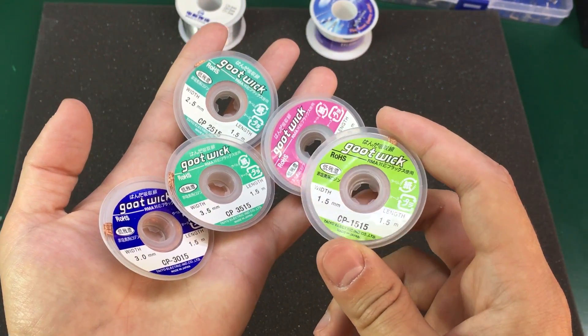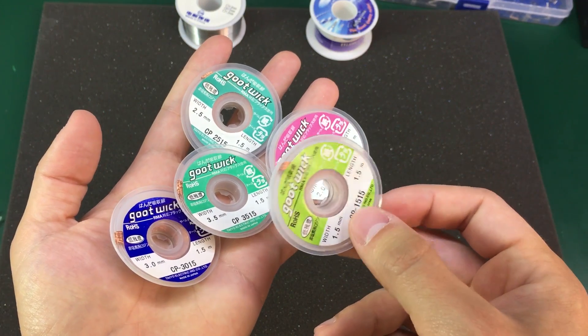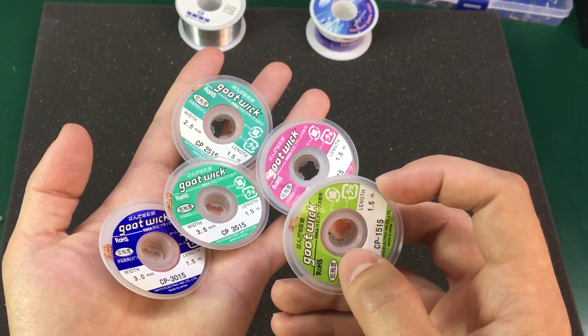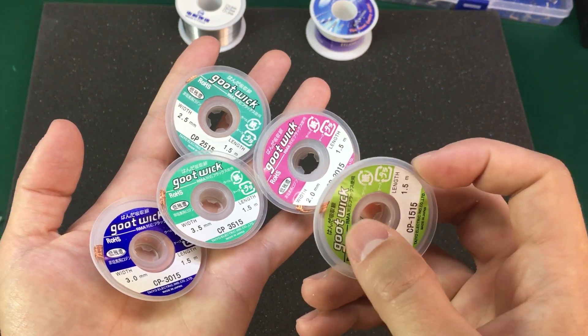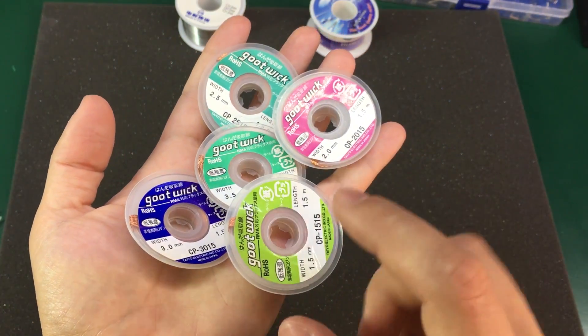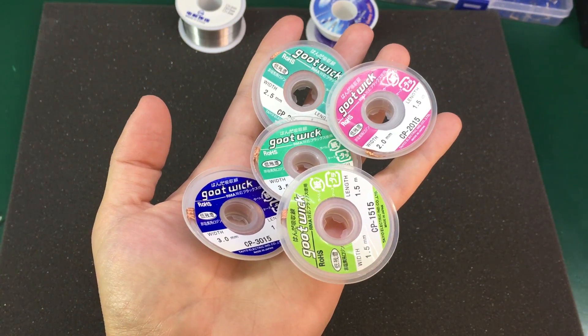Use together with some good flux it shouldn't matter that much if they're genuine or not. Because with a genuine good wick you get better flux already in the braid and maybe slightly more copper strands in the braid. But if you can get these ones for half the price from China I think they're worth buying.